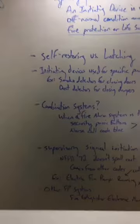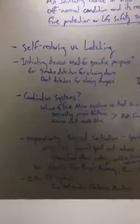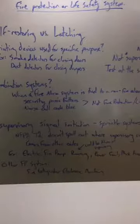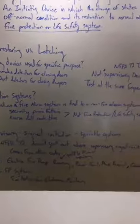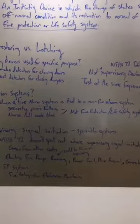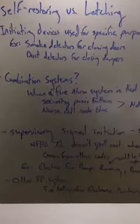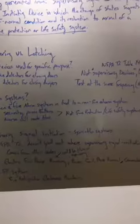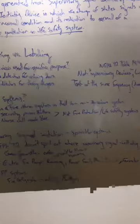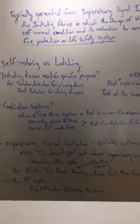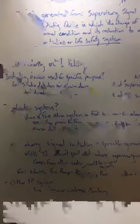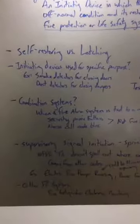What about combination systems? I get this question a lot. So when a fire alarm system is tied to a non-fire alarm system, it generates what's called a combination system. Examples of this are security panic buttons, nurse call code blue. Those are not fire protection life safety systems. I'm sure you're probably thinking code blue is not a life safety system. No, not from the perspective of what we talk about life safety systems being fire-related. So when an NFPA is talking about it, it doesn't cover code blue.